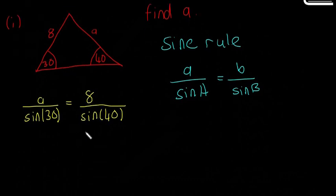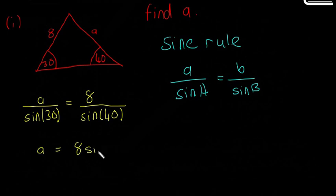So the next step then is we're going to multiply both sides by sine 30, so to make A go on its own. So it's going to be A then is equal to 8 multiplied by sine 30 over sine 40. So if you multiply this side by sine 30, it'll cancel top and bottom, and you'll just be left with A.